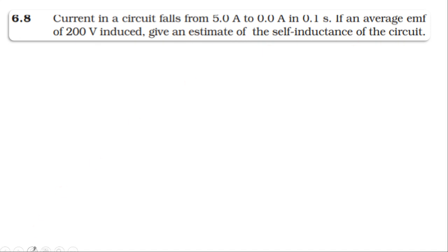The induced emf equals minus L di by dt, where di by dt equals delta i by delta t. Now the induced emf equals minus L times final current minus initial current divided by time.